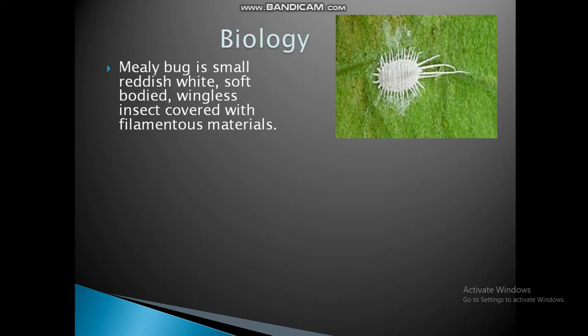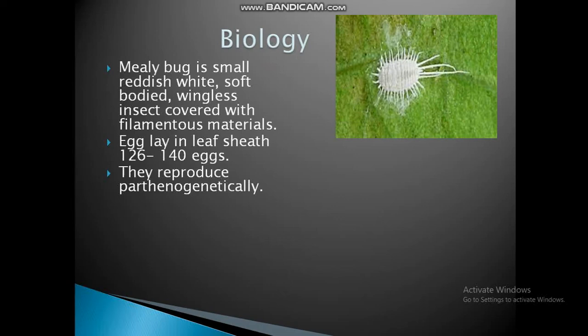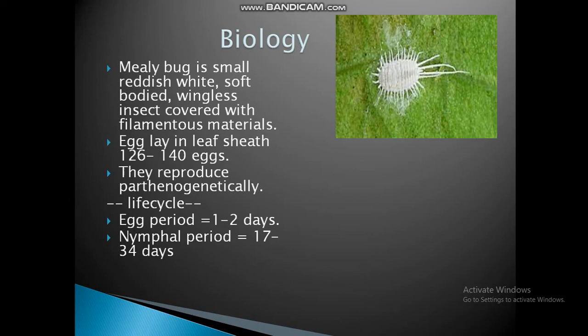Biology: mealybugs are small, reddish-white, soft-bodied, wingless insects covered with filamentous waxy material. Eggs are laid in the leaf sheath, 126 to 140 eggs. They reproduce parthenogenetically, meaning reproduction from an ovum without fertilization. Life cycle: egg period 1 to 2 days, nymph period 17 to 34 days.